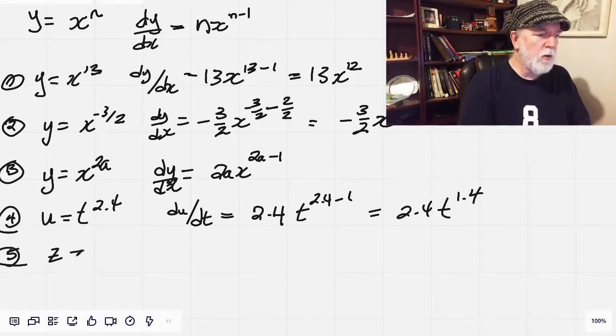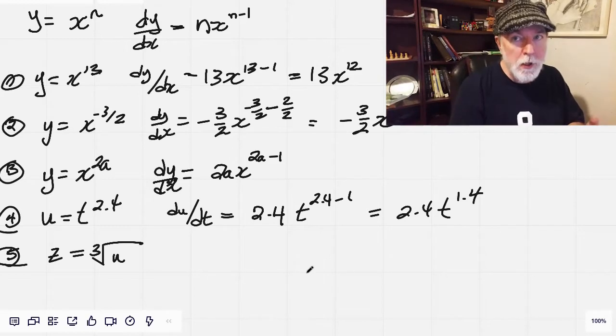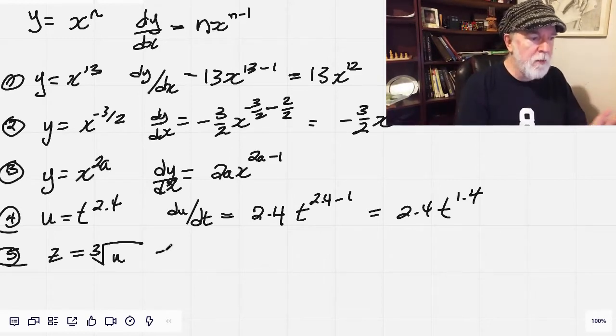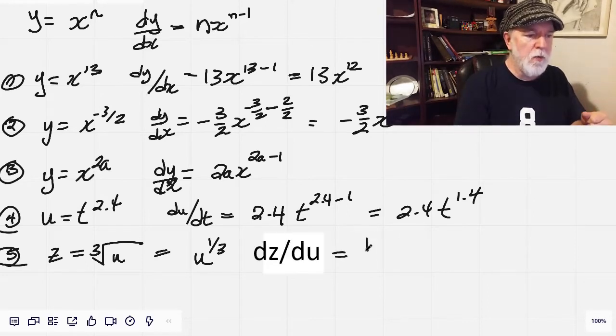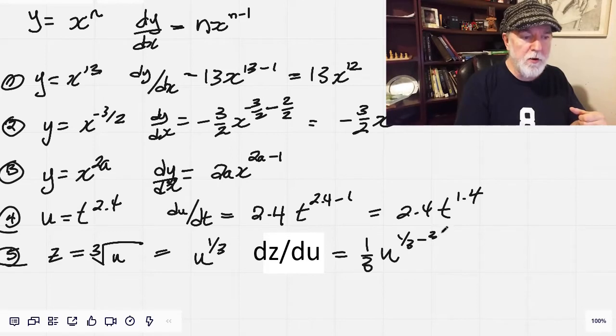And number five, z equals the cube root of u. Now, we'll benefit from writing this as an exponent. So that's u to the 1/3, and then now we go to the same song and dance. Bringing the 1/3 over here to the front, u to the 1/3 minus 1, so minus 3/3, which all equals 1/3, u to the 1 minus 3, so minus 2/3.